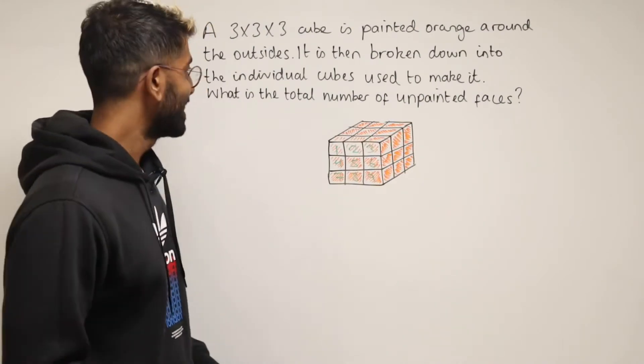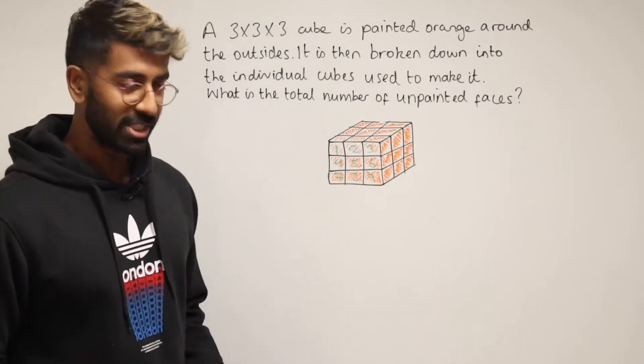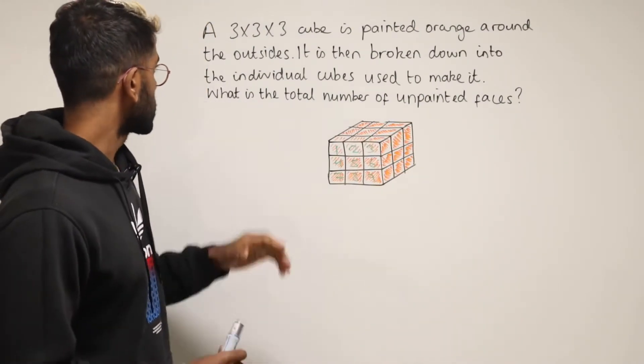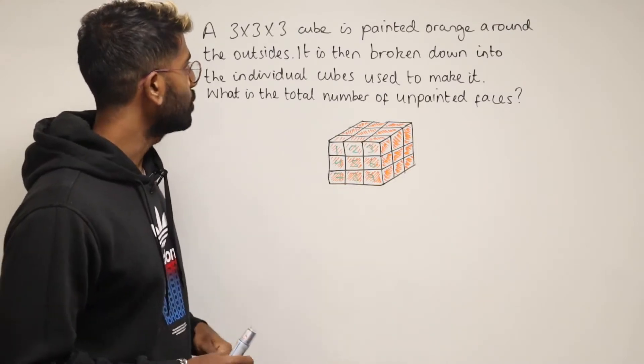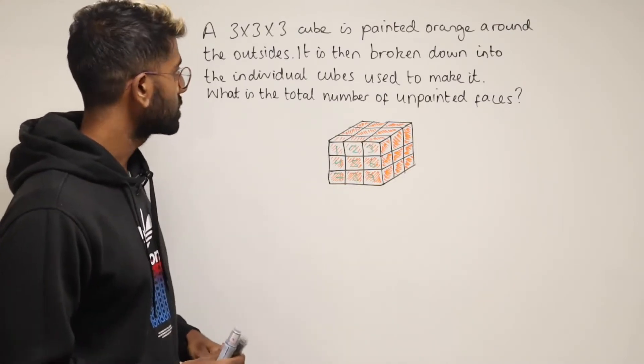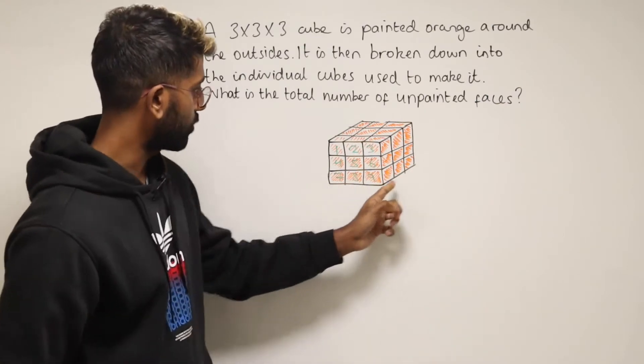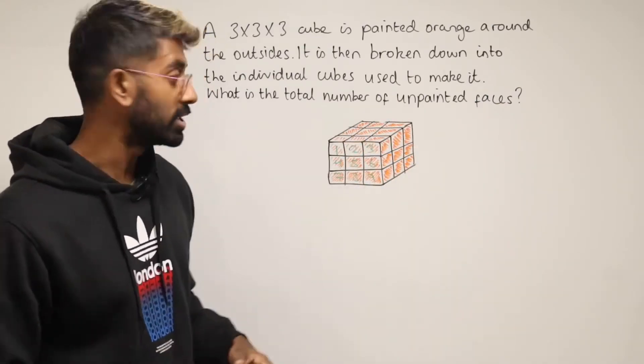All right, welcome back to the channel. We've got an 11 plus question and here it is. We've got a 3 by 3 by 3 cube that's painted orange around the outsides. You can see the outside there is all orange.